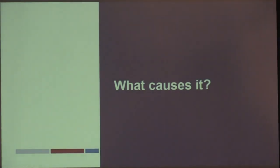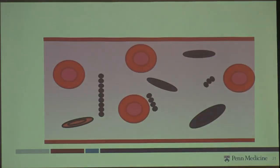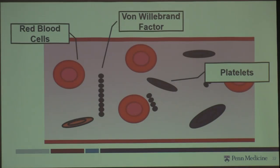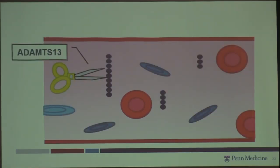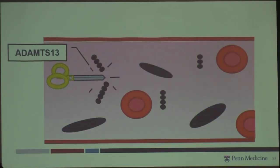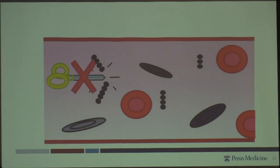Big question: what causes TTP? Inside the blood vessel we have red blood cells, von Willebrand factor, and platelets. We also have ADAMTS13, which I describe as the scissors of the cell. What ADAMTS13 is supposed to do is clip the von Willebrand factor, breaking what we call multimers into smaller pieces so things can flow nicely through the blood vessel.